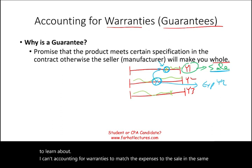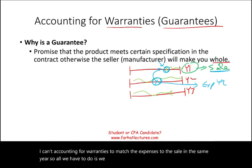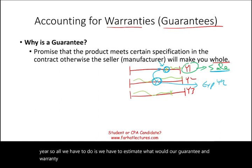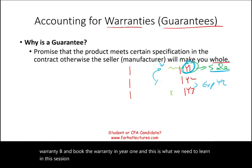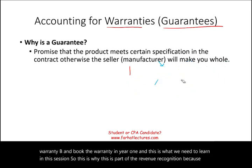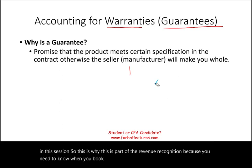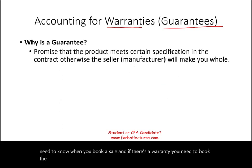We have to estimate what our guarantee and warranty cost will be and book the warranty expense in year one. This is part of revenue recognition — you need to know that when you book a sale, if there's a warranty, you book the related expense in the same period. We'll work an example.